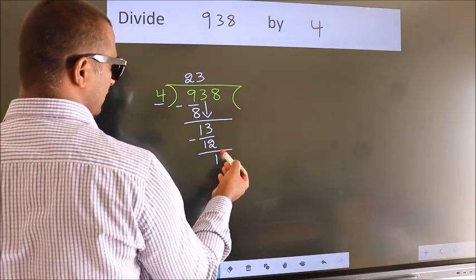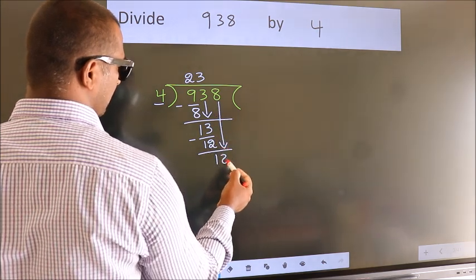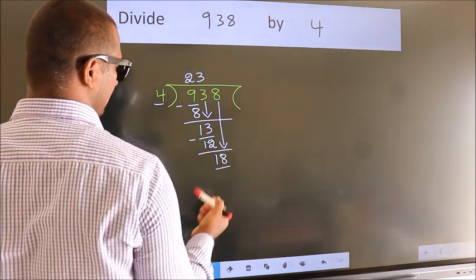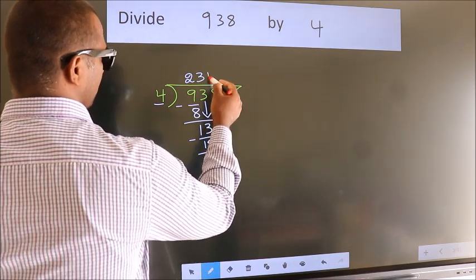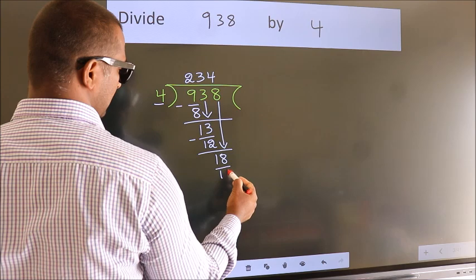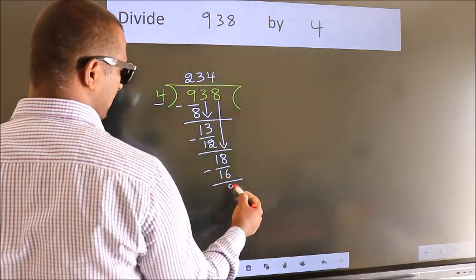After this, bring down the beside number. So 8 down, so 18. A number close to 18 in the 4 table is 4 4s 16. Now we subtract. We get 2.